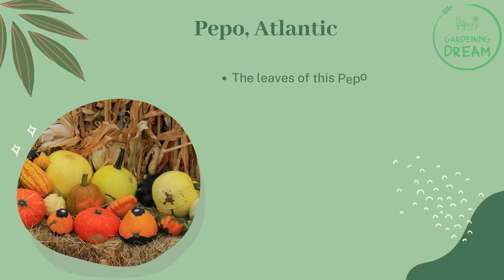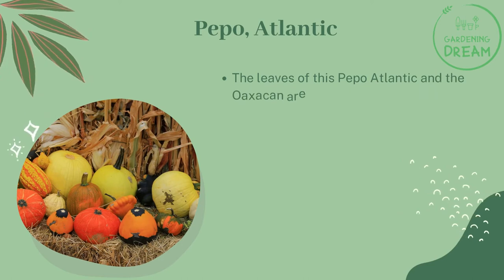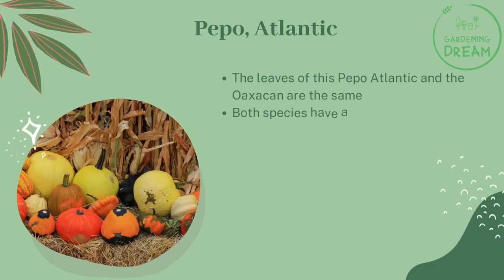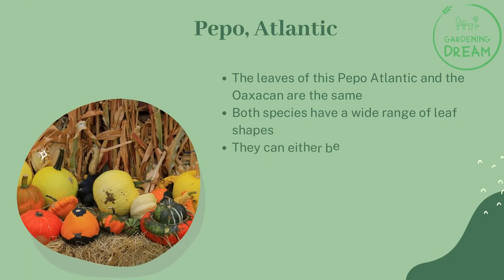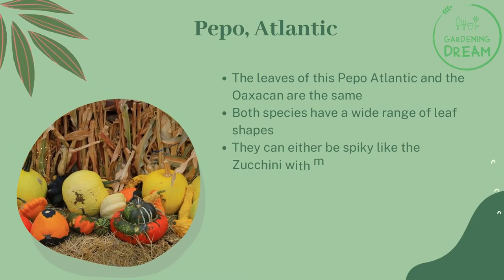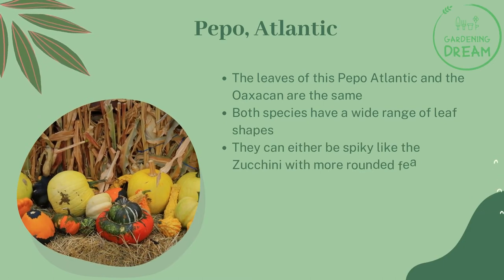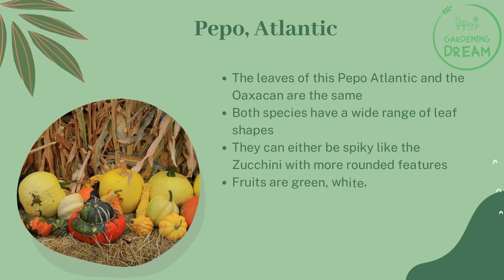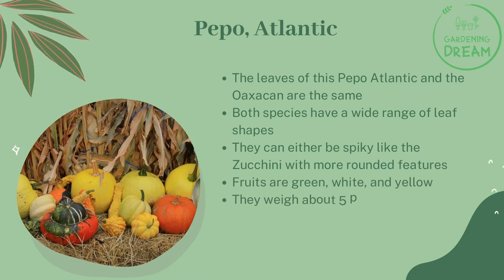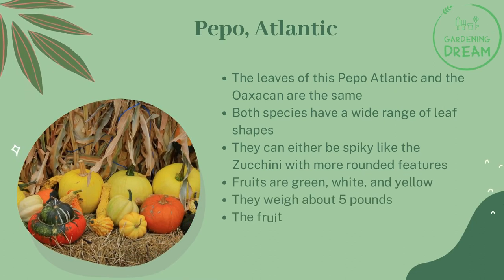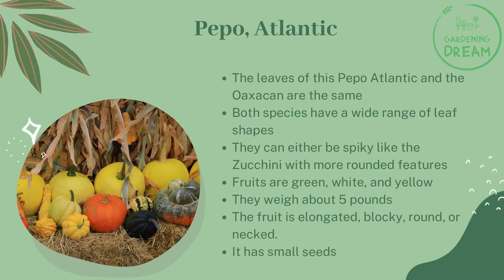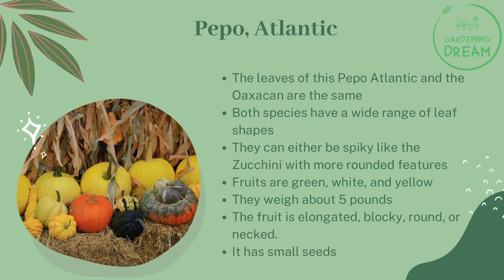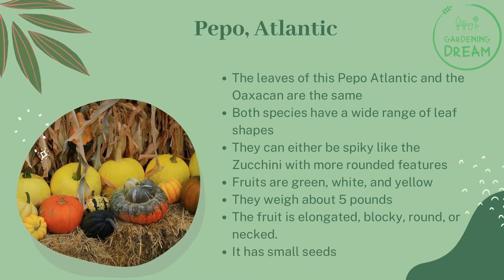Pepo, Atlantic: The leaves of the Pepo Atlantic and the Oaxacan are the same. Both species have a wide range of leaf shapes — they can either be spiky like the zucchini or have more rounded features. Fruits are green, white, and yellow. They weigh about 5 pounds. The fruit is elongated, blocky, round, or necked. It has small seeds.